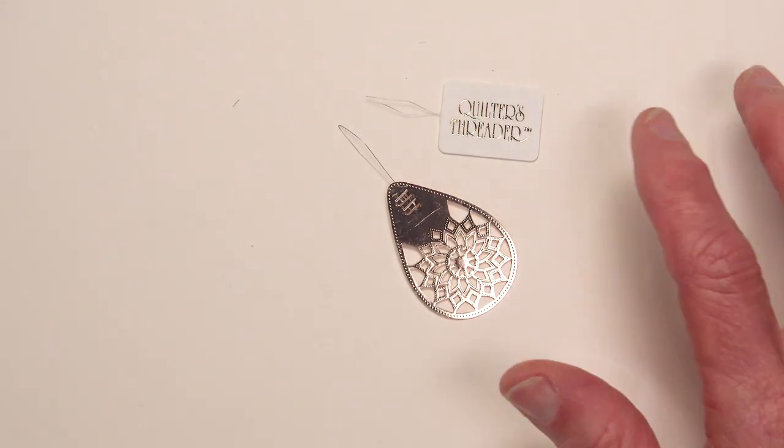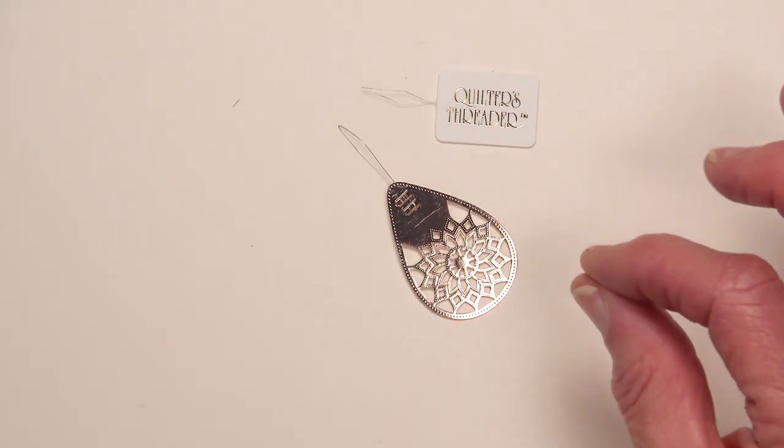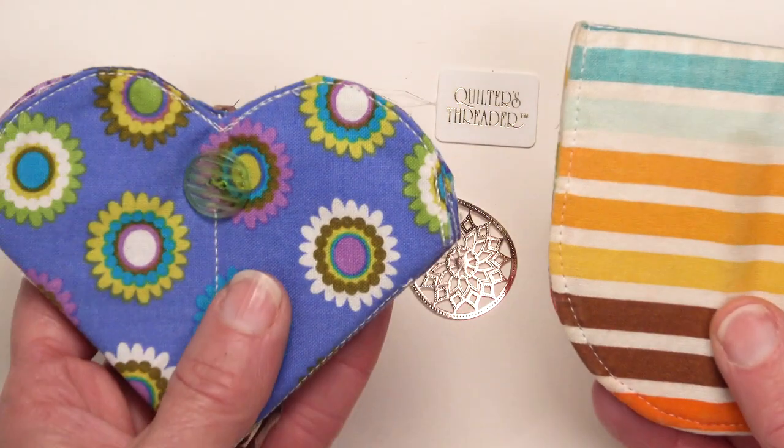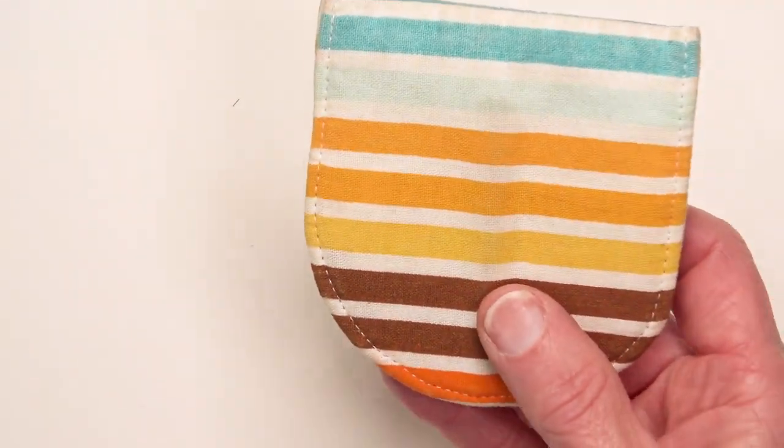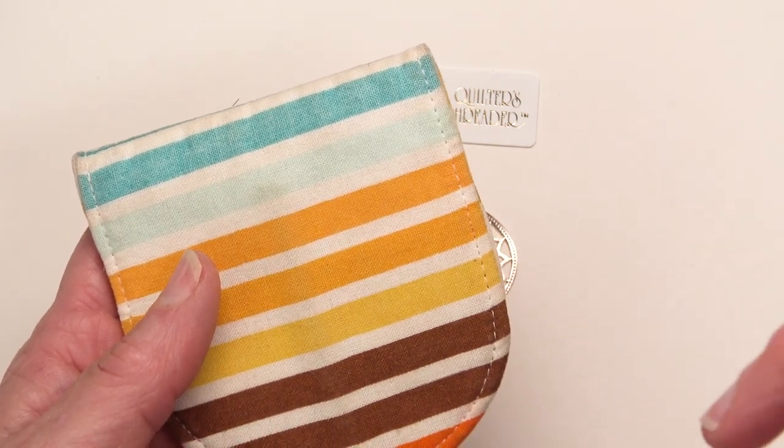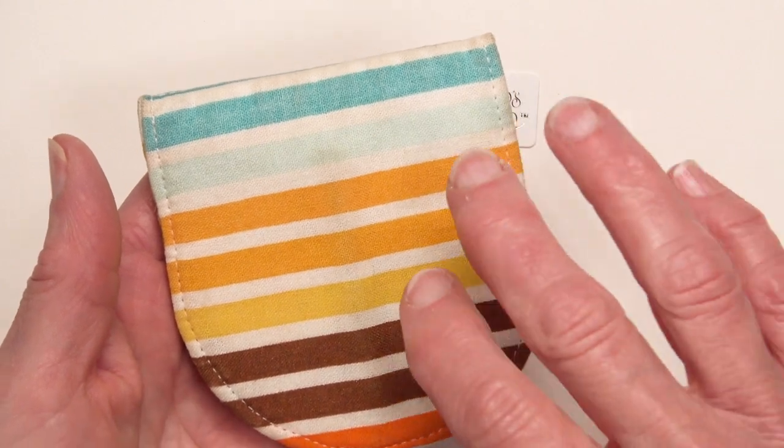Once you've opened either of these wire threaders, you want to have a place to store them in between use. I like my needle caddies. Either one. There are free patterns for both of these at pieceocake.com. Come look under the patterns, the free patterns. You'll find them there under books and patterns.